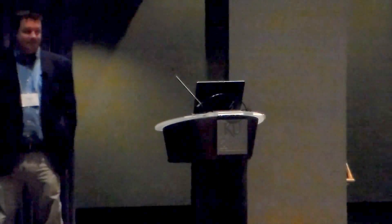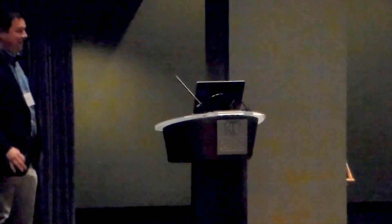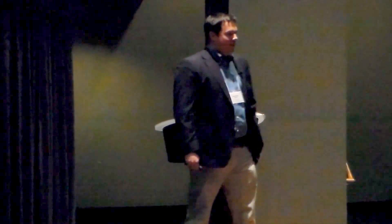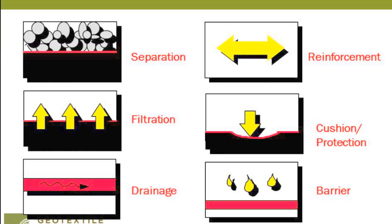On the geosynthetic side, very basic discussions at this point, but these are the six primary functions of a geosynthetic: separation, filtration, drainage, reinforcement, cushioning protection — a lot of times on landfills for protecting the liner material. The geocushion is typically anywhere from an eight ounce on up, depending on what the project sites. And in some cases, geosynthetics are also a barrier.